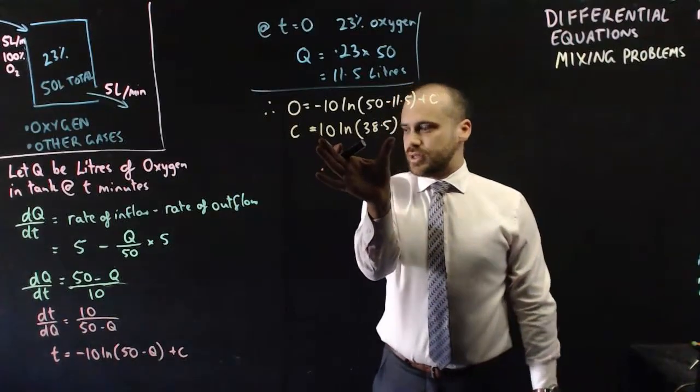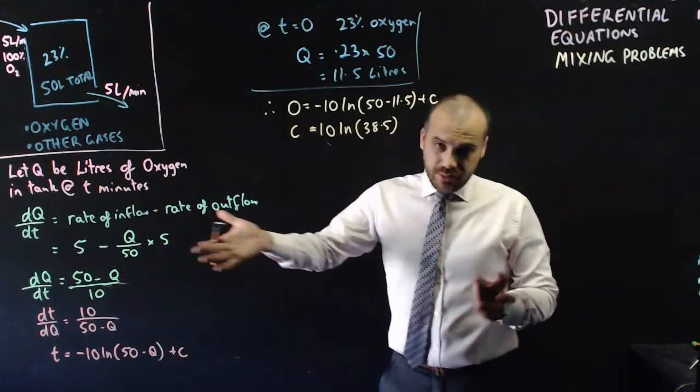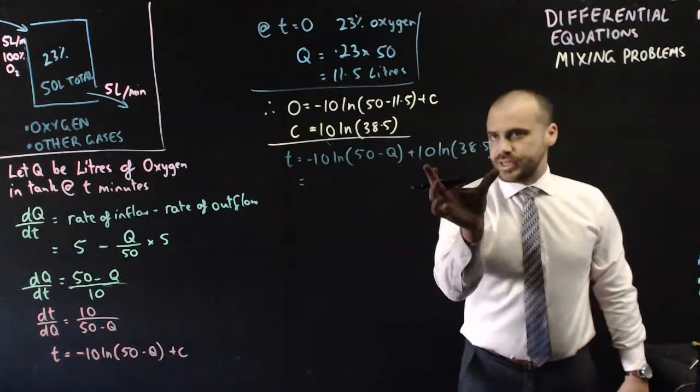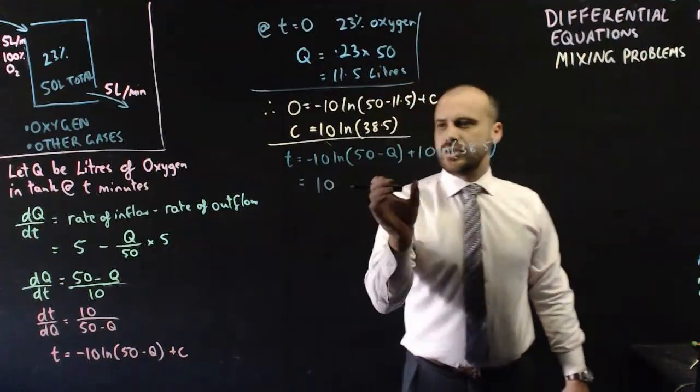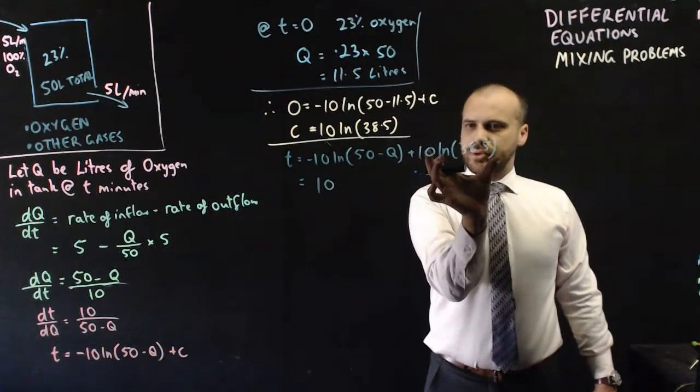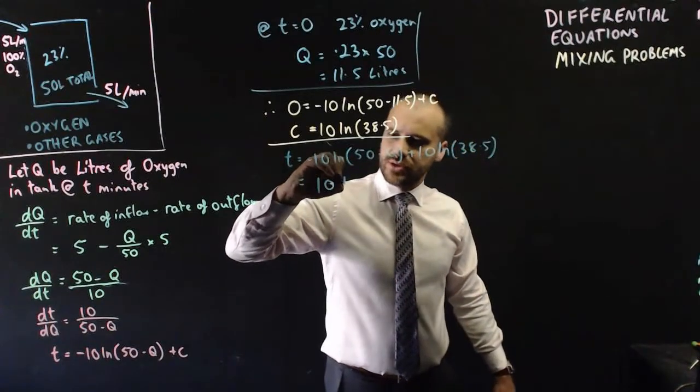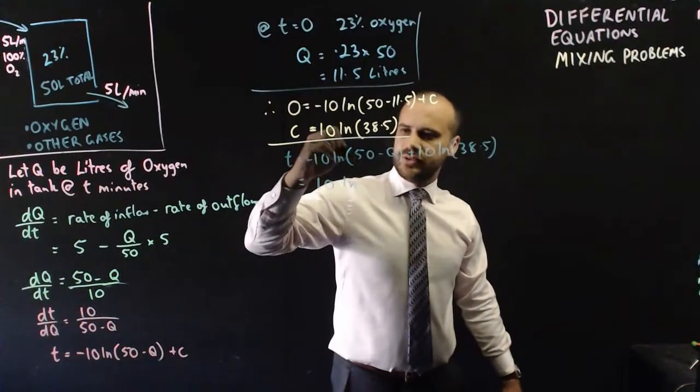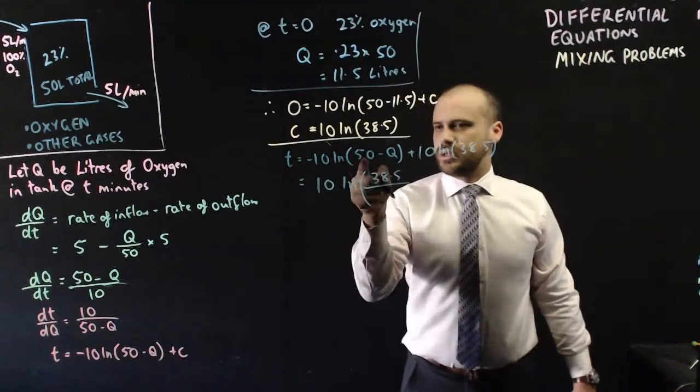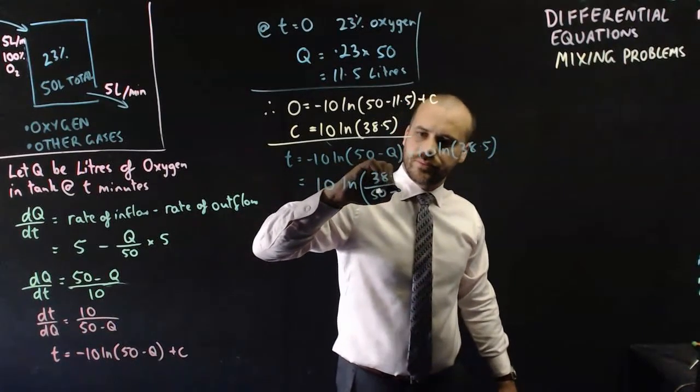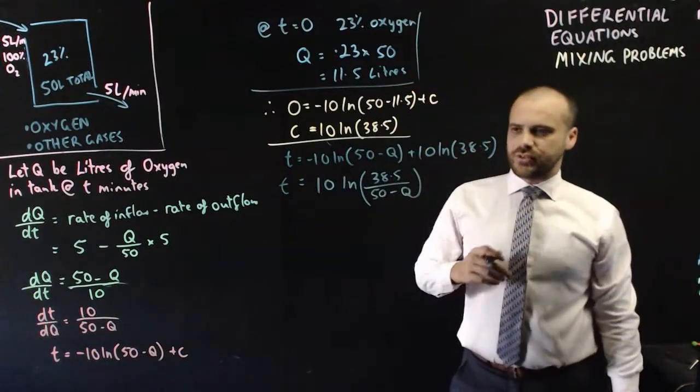Now that we have a C value here, we can put that C value back into our original equation, and because they're logs, we're going to be able to do something like smushing them together. 10 and negative 10, so 10 on the outside, and then you get ln(38.5) minus ln this. And our log laws are going to let us do ln(38.5) divided by 50 minus Q. Okay, and that is our equation for t.